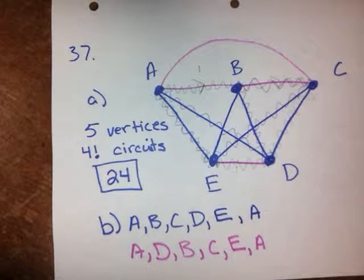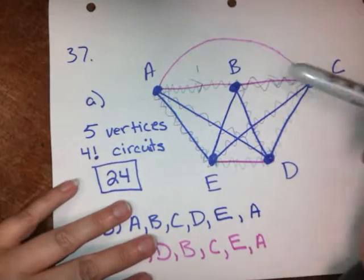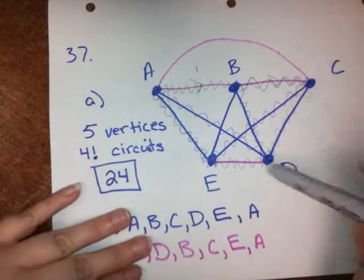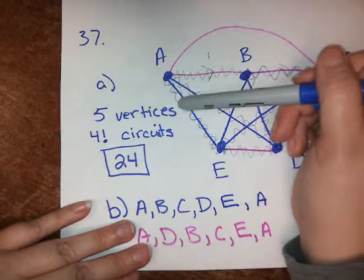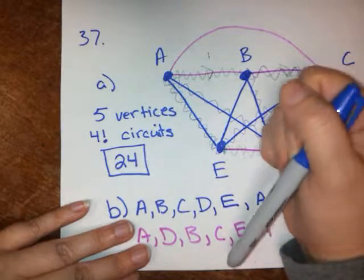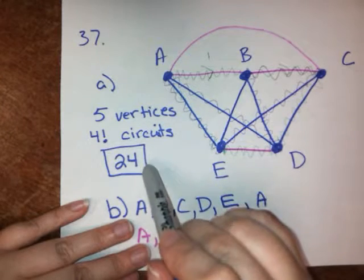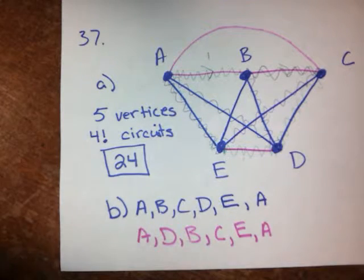The first thing we had to do was add edges to make this a complete graph. So, we just had to fill in the missing edges. If there wasn't an edge between two vertices, we put one in there. That made it a complete graph. So, now we have a complete graph with five vertices, and we know the rule is that if it's a complete graph with five vertices, there are four factorial Hamilton circuits in that graph, which means four factorial equals 24. There are 24 Hamilton circuits in this graph.